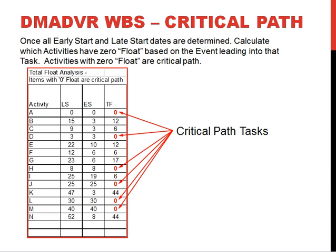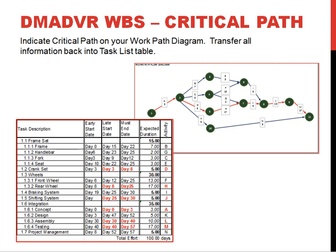Once completed, we go to the total float analysis table and calculate for each activity how many days of float they have. Any activities that come back with a result of zero are our critical path tasks. From there, we complete our task list table, which feeds into the Gantt chart. We can also go to our work path flow diagram and indicate the critical path by changing the color of the arrows.